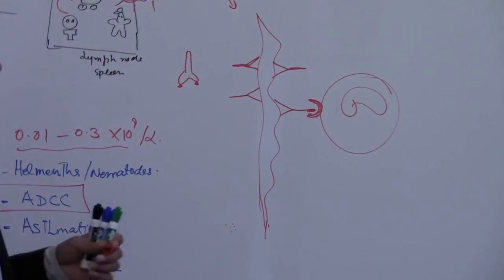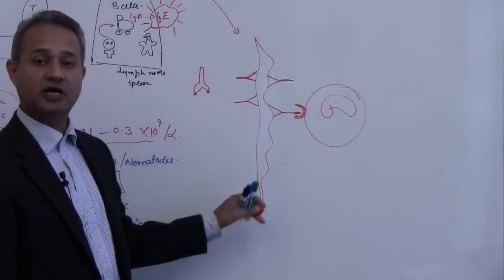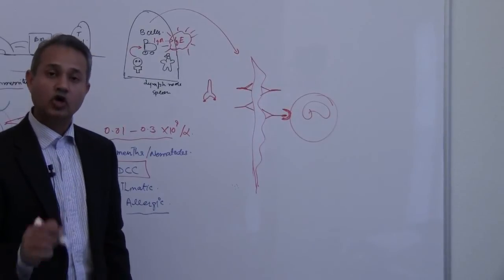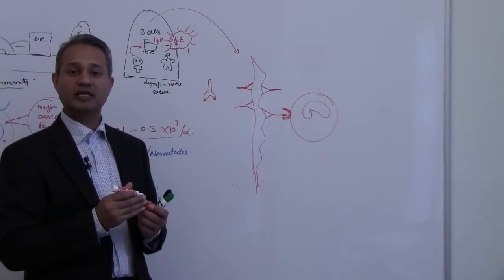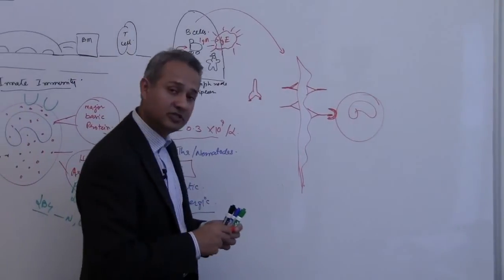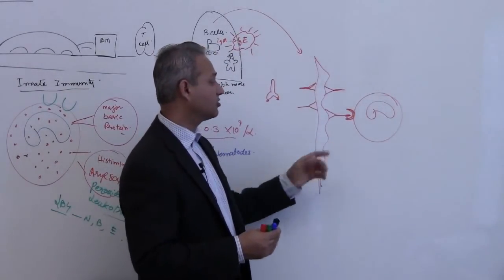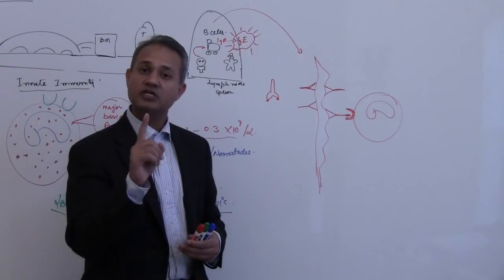Remember it cannot phagocytose this larva. Macrophage cannot do that, neutrophil cannot do that. So what are we going to do? Normal function of immunoglobulin is to allow phagocytosis, that is not going to happen here. This microscopic cell is not going to be able to eat up this larva, so what is it going to do?